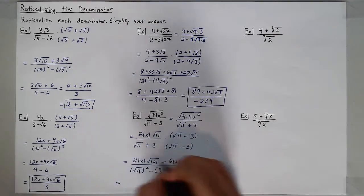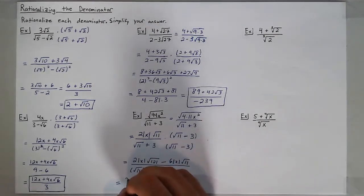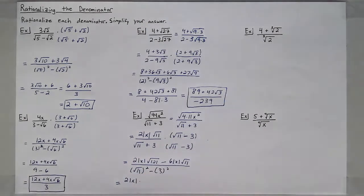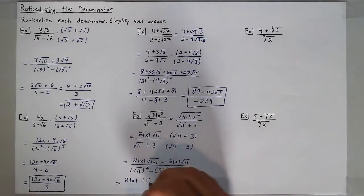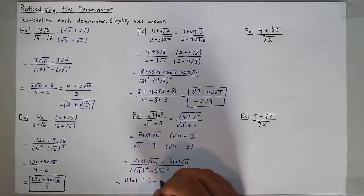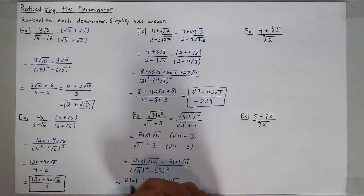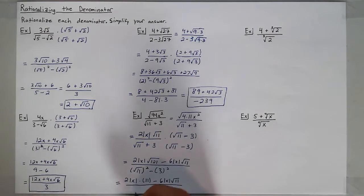Up top the terms can't combine, so I must have 2 times the absolute value of x times the square root of 121, which is 11, minus 6 times the absolute value of x times the square root of 11, all over 11 minus 9.